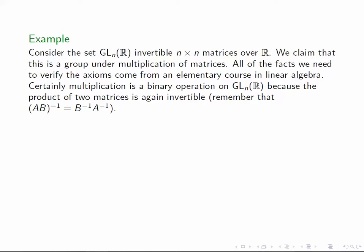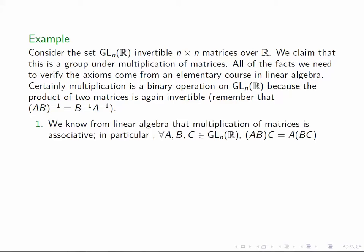First of all, we need to check that multiplication is a binary operation. In other words, the product of two invertible matrices is again invertible. This is a well-known fact. And in fact, we have the formula that the inverse of AB is B inverse times A inverse. So multiplication is indeed a binary operation.